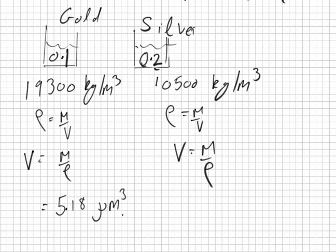10 to the minus 6. And then for the silver it is 0.2 over 10,500. So that one there is not quite as small. 19.0 micrometers cubed.